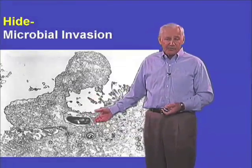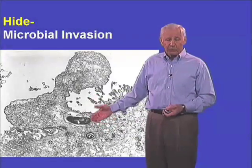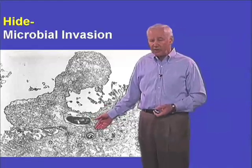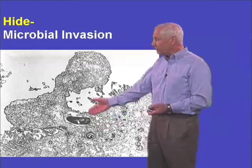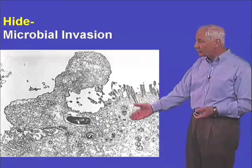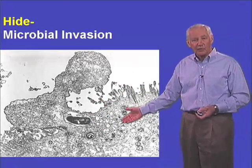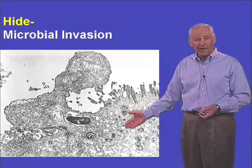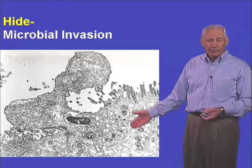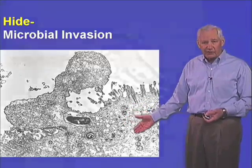Some organisms literally breach the surface of epithelial cells and enter. This is a picture of an organism — salmonella, which causes food poisoning — actually breaching the epithelial barrier in the intestinal tract.